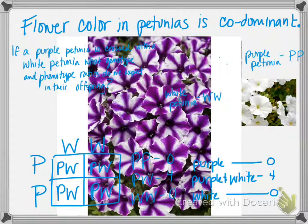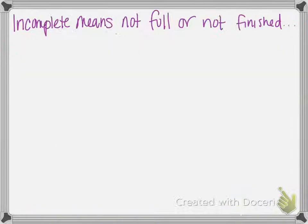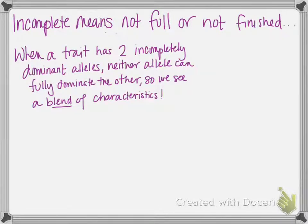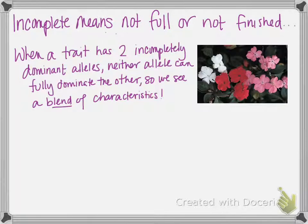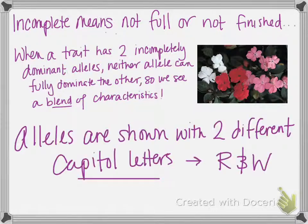What about incomplete dominance? Incomplete means not full or not finished. When a trait has two incompletely dominant alleles, neither allele can fully dominate the other, so what we see is a blend of characteristics. This is really common in impatiens, the flowers pictured here, along with another type of flower which we'll talk about in a moment. Just like with codominance, the alleles for an incompletely dominant trait are shown with two different capital letters. In the case of these petunias, we would use R and W.